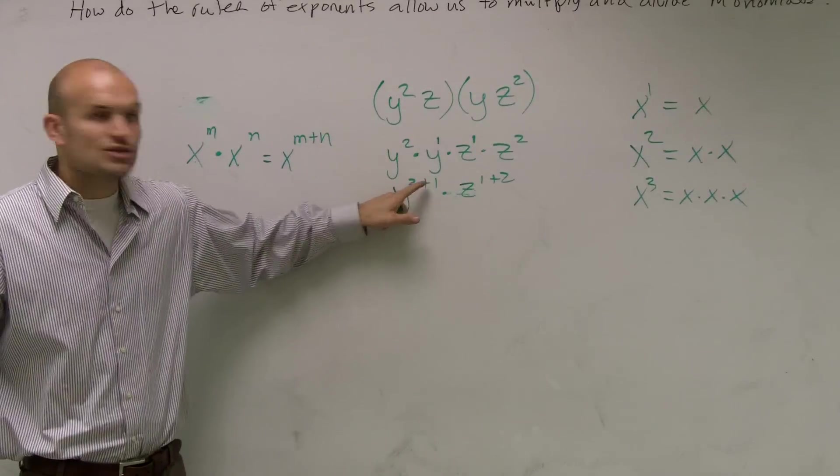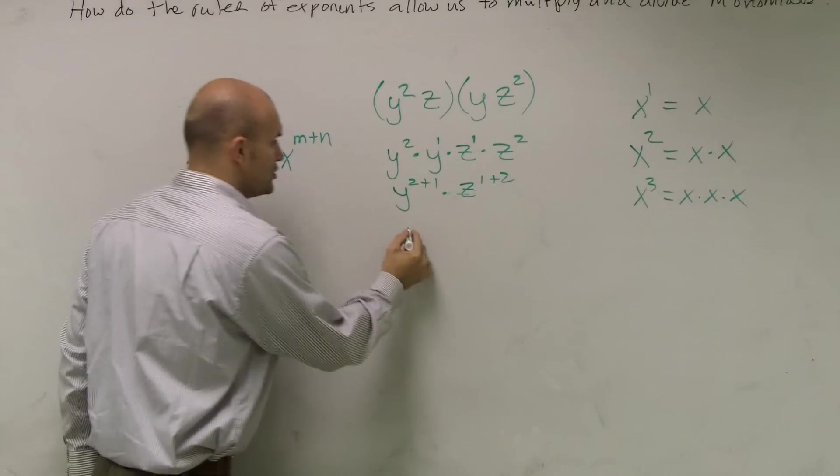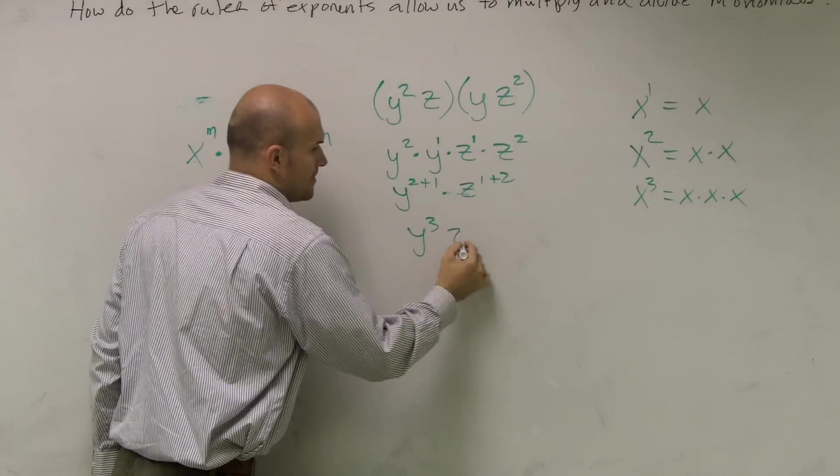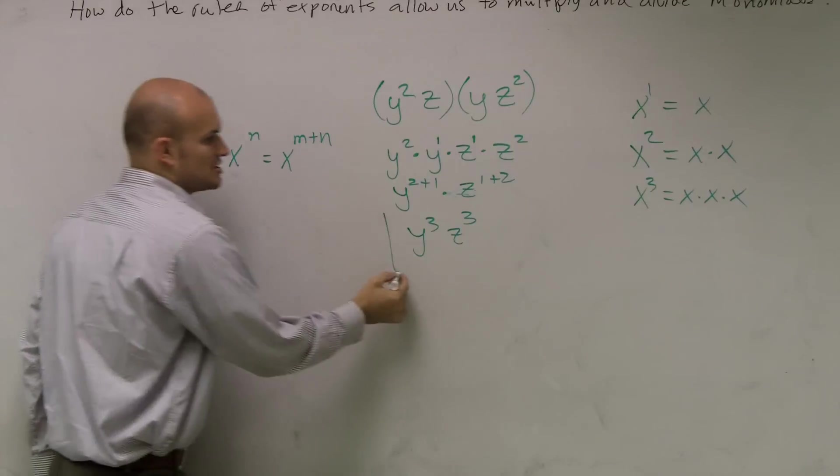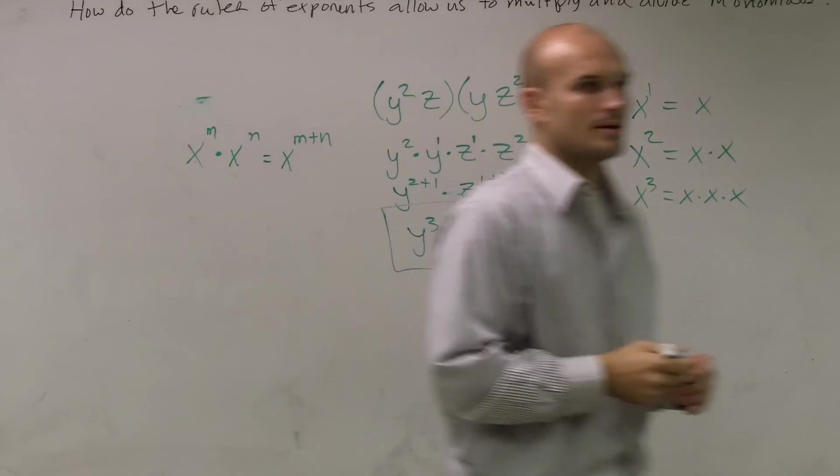Well, y squared plus 1 is going to give you y cubed. z, 1 plus 2 is z cubed. And that's it. Justify your rules. And you guys got it. Thank you.